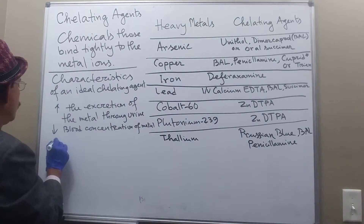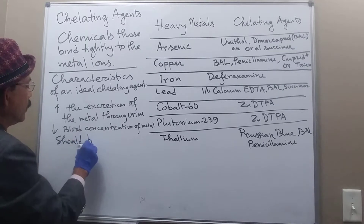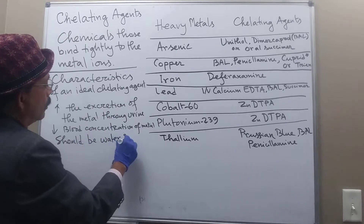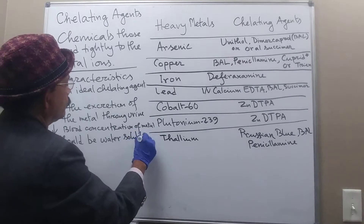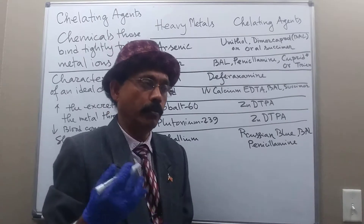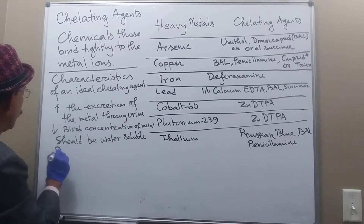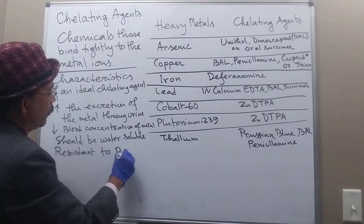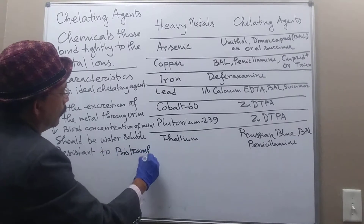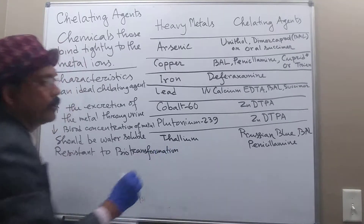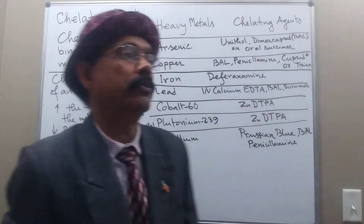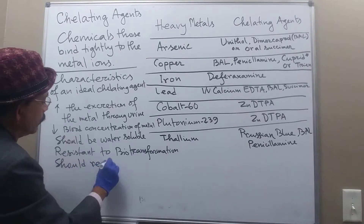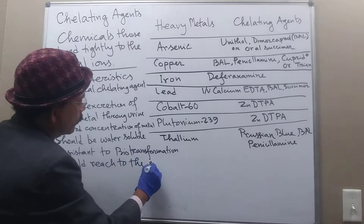An ideal chelating agent should be water-soluble. It should be resistant to biotransformation, and it should reach the site of the metal.